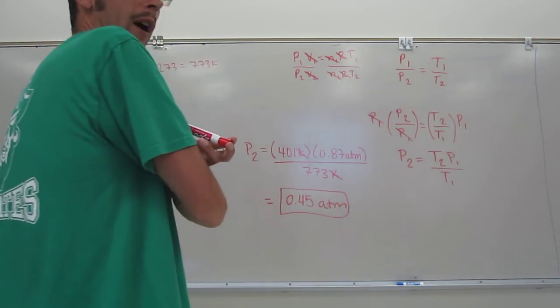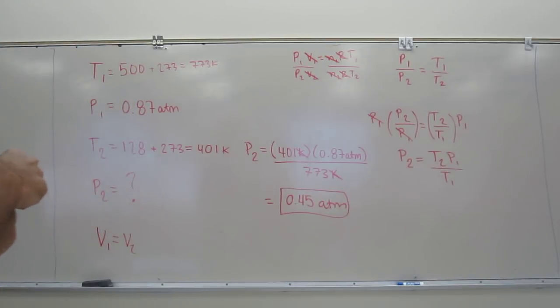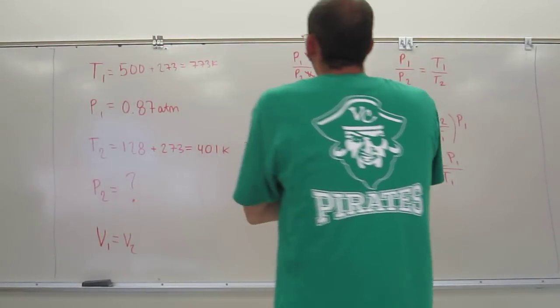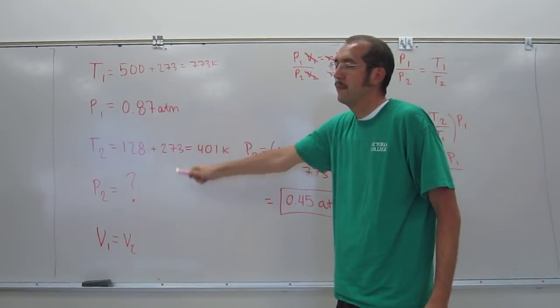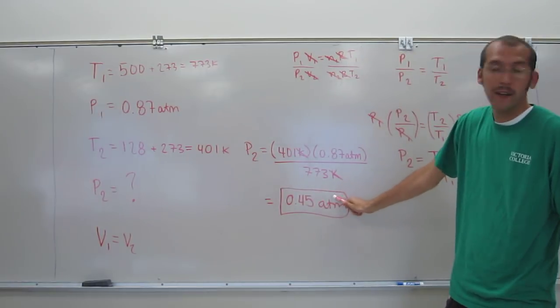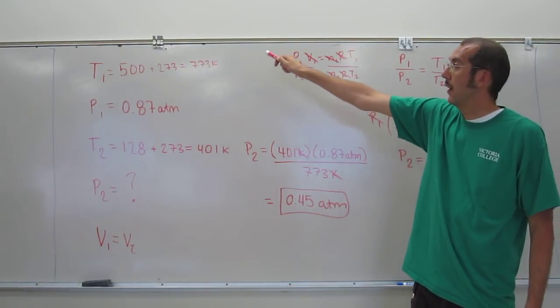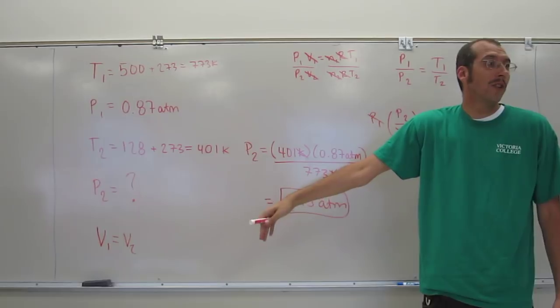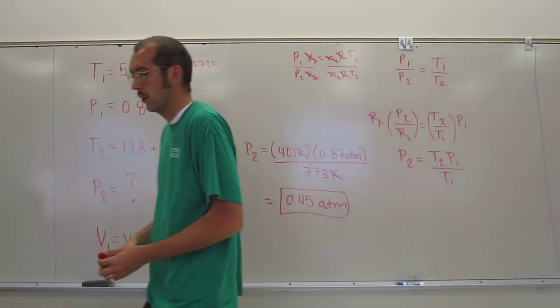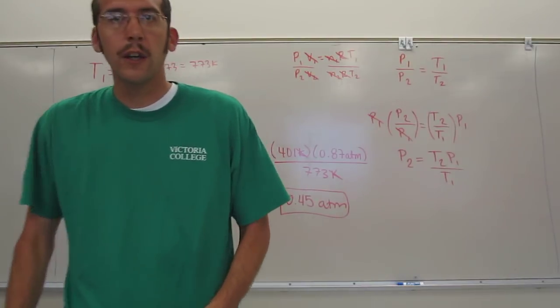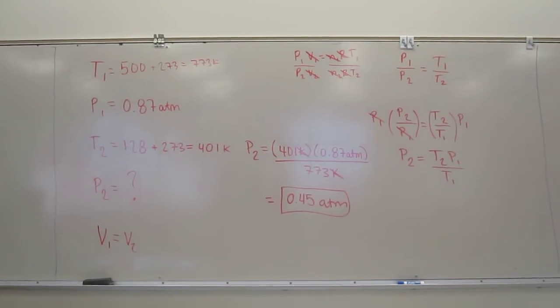So you just want to do it stepwise. All of these are stepwise things. And if you're skipping steps or things like that, you're going to mess up. And the other thing you want to ask yourself is, does my answer make sense? It went down. You would expect it to go down. From hot to cold, if you put a balloon in the cold, it's going to decrease in pressure. Cool. Thank you.